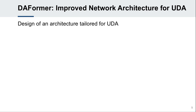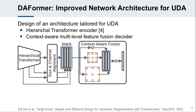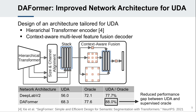Based on a study of the domain adaptation capability of different network architectures, we compile an architecture that is tailored for UDA. For the encoder, we utilize a hierarchical transformer, which is revealed to be more domain-robust than the predominant CNNs. For the decoder, we propose a context-aware feature fusion, which utilizes domain-robust context clues from different encoder levels. Compared to the DeepLab v2 architecture, DAFormer significantly reduces the performance gap between UDA and the supervised oracle.